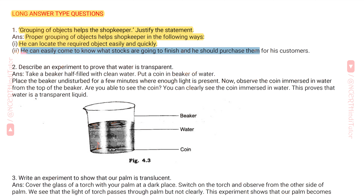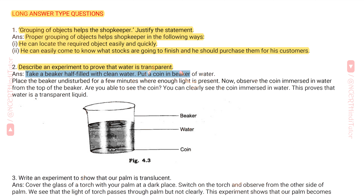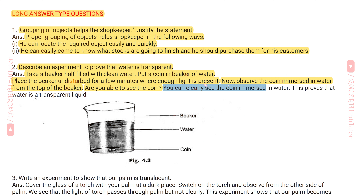Question 2: Describe an experiment to prove that water is transparent. Answer: Take a beaker half-filled with clean water. Put a coin in the beaker of water. Place the beaker undisturbed for a few minutes where enough light is present. Now observe the coin immersed in water from the top of the beaker. You can clearly see the coin immersed in water.